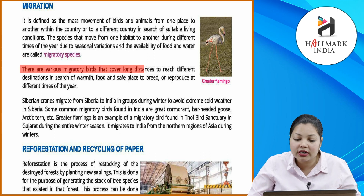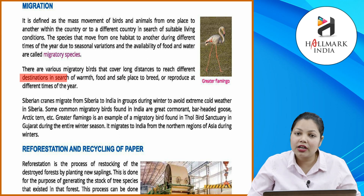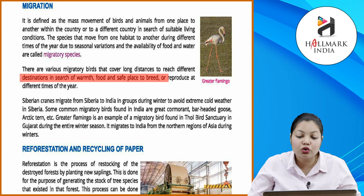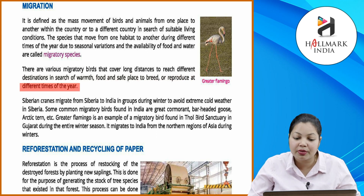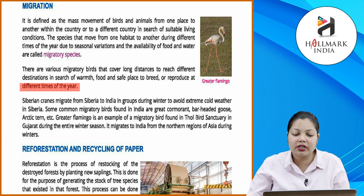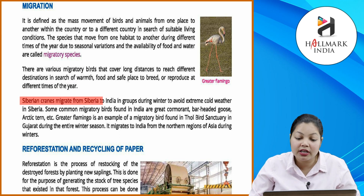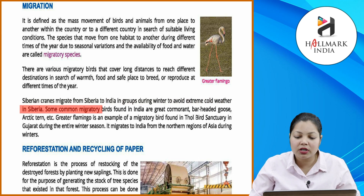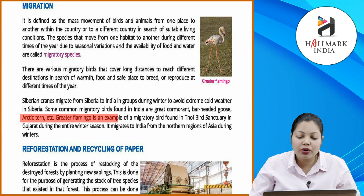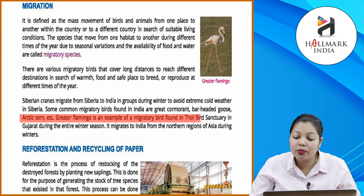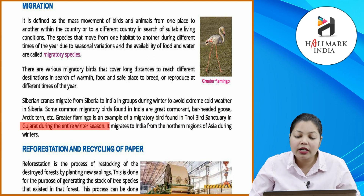There are various migratory birds that cover long distances to reach different destinations in search of warmth, food, and a safe place to breed. Siberian cranes migrate from Siberia to India in groups during winter to avoid extreme cold weather. Some common migratory birds found in India are the great cormorant, bar-headed goose, and Arctic tern. The greater flamingo is an example of a migratory bird found in Thol Bird Sanctuary in Gujarat during the entire winter season.